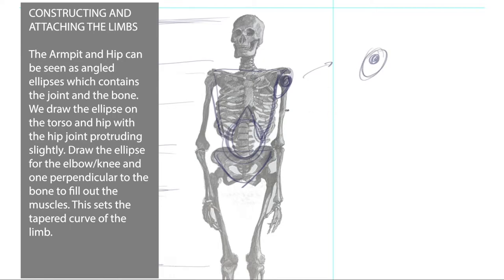What we've got is the ball of the joint and then the socket into which the arm is going. We draw an ellipse, we draw an ellipse at the elbow, and then there's another one as the bone goes down.